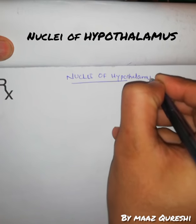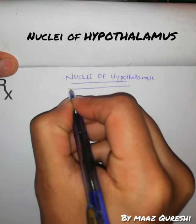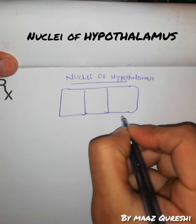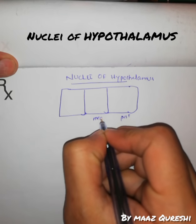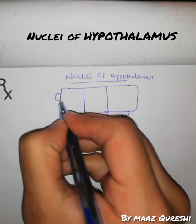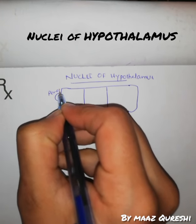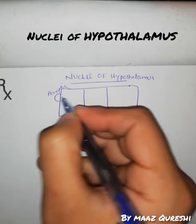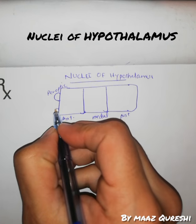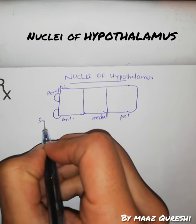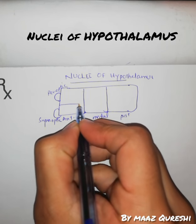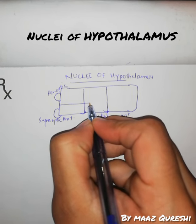We divide the hypothalamus into 3 boxes: anterior, middle, and posterior. When talking about the anterior, we know that this is the pre-optic area. The pre-optic area relates to the optic nerve, and this is the supra-optic nucleus.